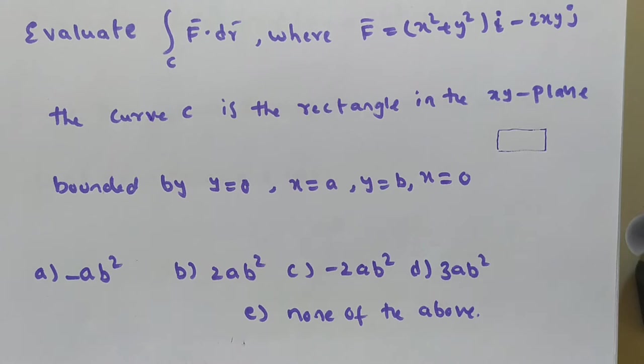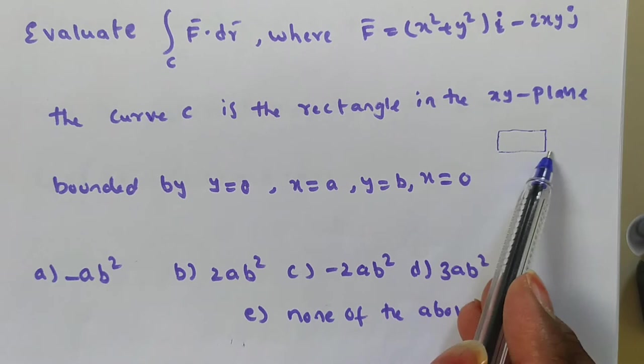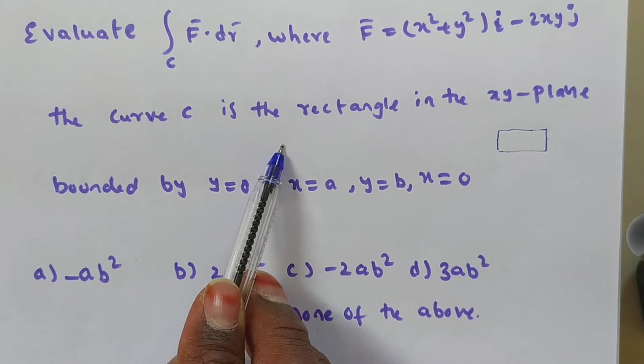Observe — I am giving a hint for you. This is the evaluation of a double integral; we are doing it in a closed region. This problem you can also solve by using Green's theorem. We will discuss Green's theorem later; before that, we will solve the problem.